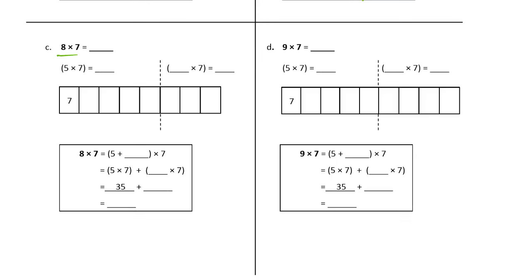Now we're going to do eight times seven. We're going to think of that as five sevens and three sevens, because five plus three is eight. Five sevens we know is 35. Three sevens: two sevens was 14, so three sevens is 21.